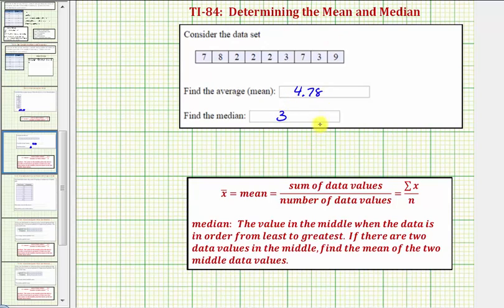To calculate these values by hand, to find the mean we'd find the sum of the data values and divide by the number of data values. Here, because we have a total of nine data values, we'd add the data values and divide by nine.